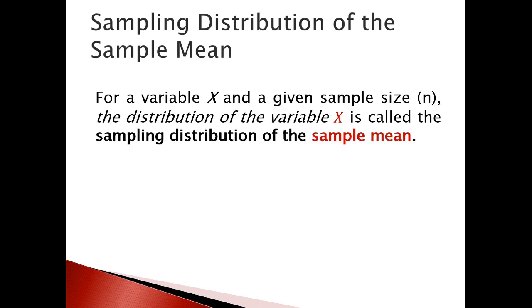Then we are interested in finding the sampling distribution of the sample mean. Let's consider a variable as x and we are going to get a sample of n. Then the variable x̄ is known as the sample mean, and the distribution of variable x̄ is known as the sampling distribution of the sample mean.